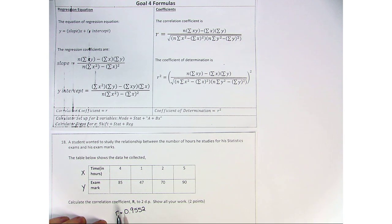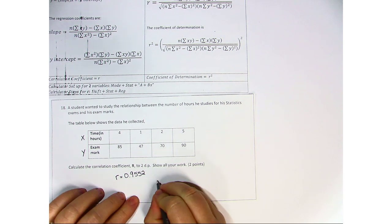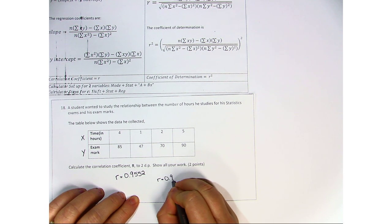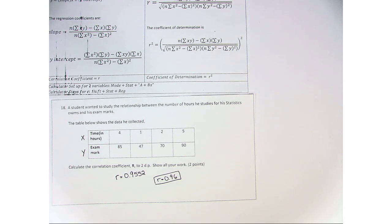Now in this case, it says round it to two decimal points. So you cannot leave it just like this. Instead, your answer will be 0.96. And this is how you solve question 18 using a calculator.